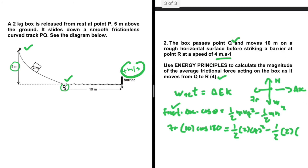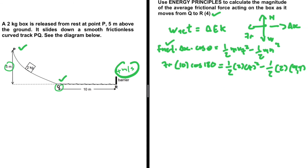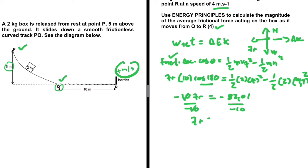Substituting: v_i = 9.9 m/s, so we have 9.9 squared. cos 180° = −1, giving −10 × F_friction. The right-hand side computes to −82.01. Dividing both sides by −10, the friction force equals 8.2 N.